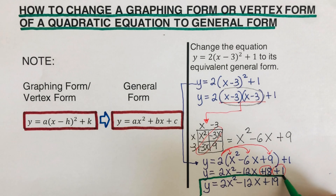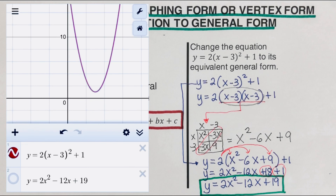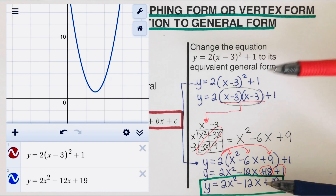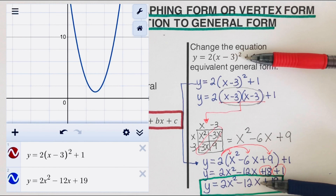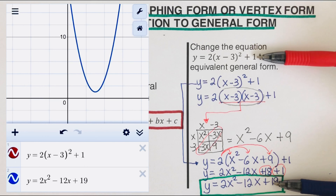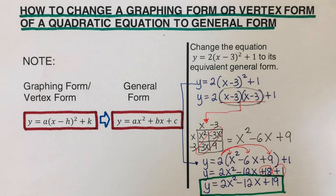On the side you'll see the graphing form in red and the general form in blue. When we graph both of them, you can see that they sit on top of each other, which confirms these two equations are equivalent.